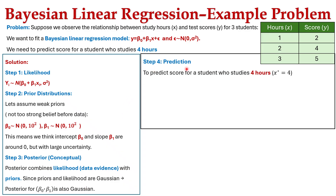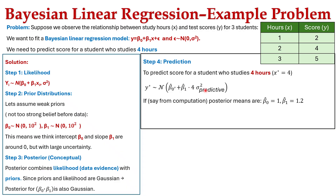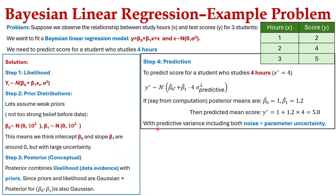In Step 4, prediction: to predict the score for a student who studied for 4 hours (x* = 4), the formula is y* ~ N(β₀ + β₁ · x*, σ²_predictive). If the posterior means are β₀ = 1 and β₁ = 1.2, then the predicted mean score is y* = 1 + 1.2 × 4 = 5.8. The predictive variance includes both noise and parameter uncertainty.